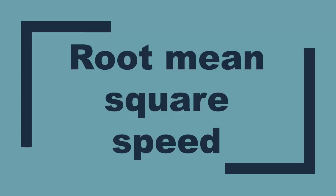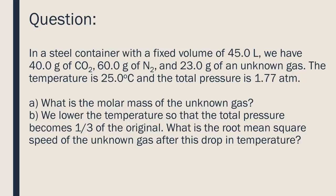Root mean square speed. In a steel container with a fixed volume of 45.0 liters, we have 40.0 grams of carbon dioxide, 60.0 grams of nitrogen, and 23.0 grams of an unknown gas. The temperature is 25 degrees Celsius and the total pressure is 1.77 atmospheres.